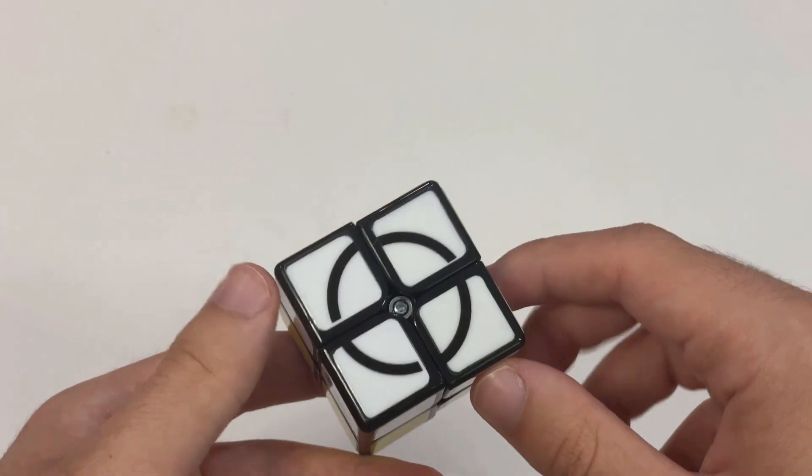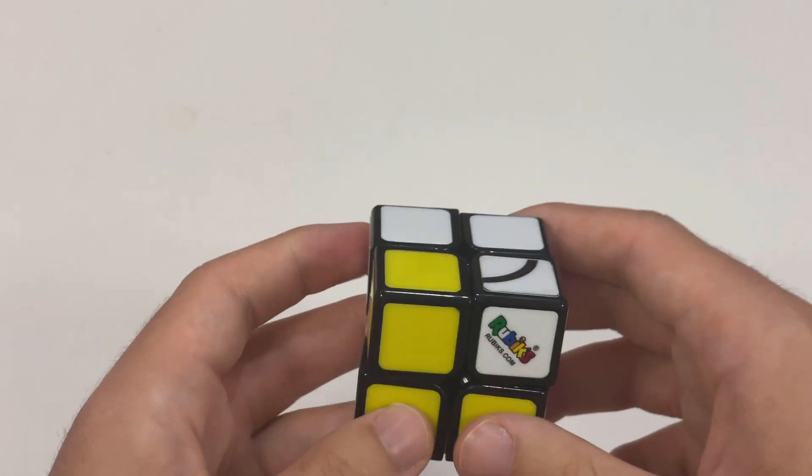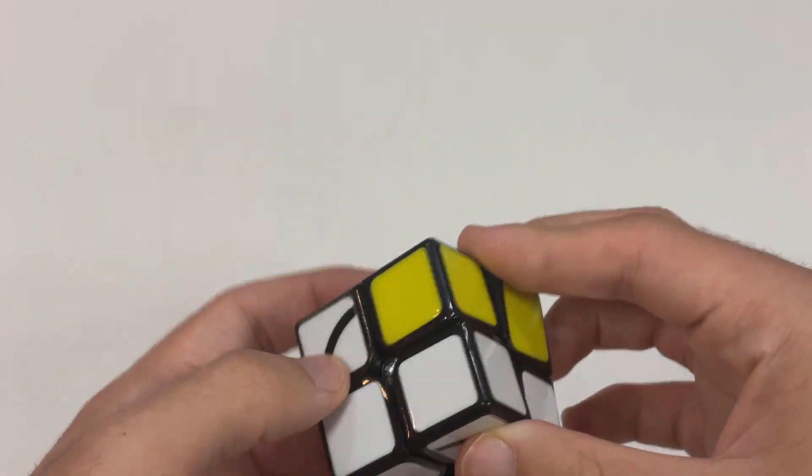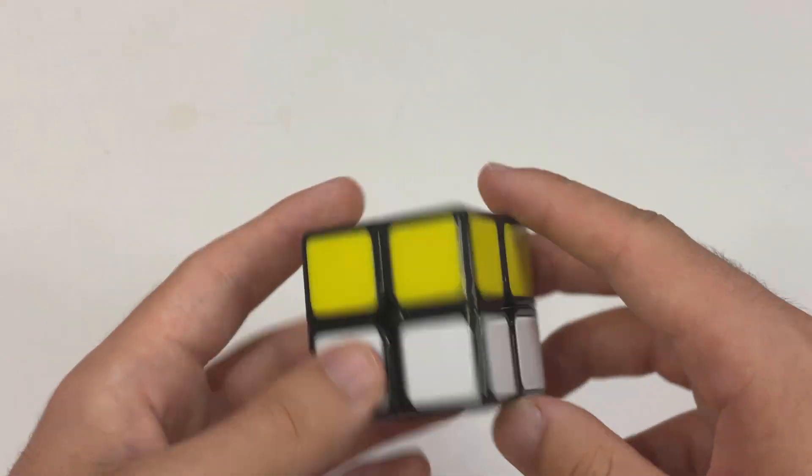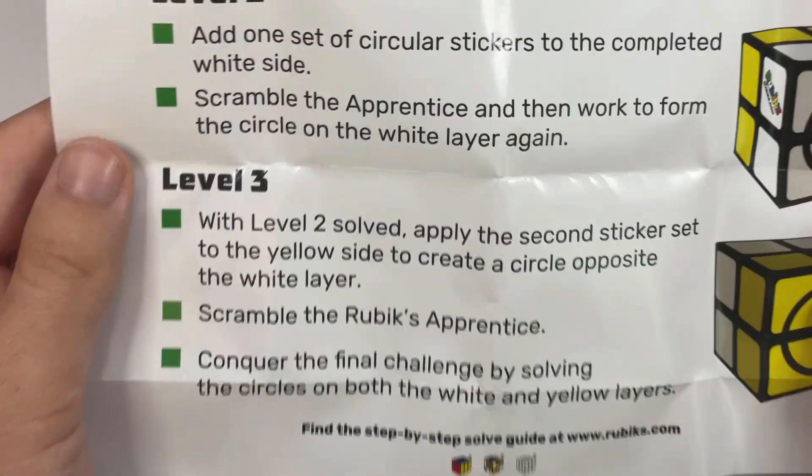Again, shouldn't be too hard. Just one, two, three, four moves solves it. Actually, now that I think about it, this would be a good tool to help 2x2 solvers solve more efficient first layers. Okay, let's see what I can do here. Maybe one, two, three solves it. Safe to say I've mastered level two.